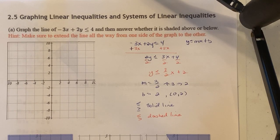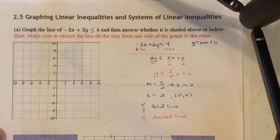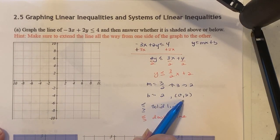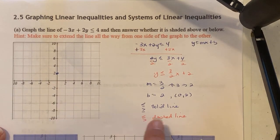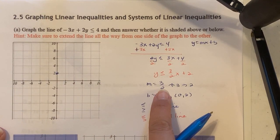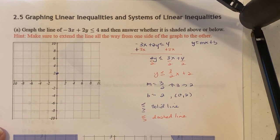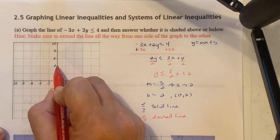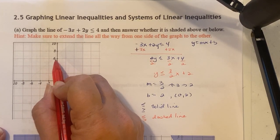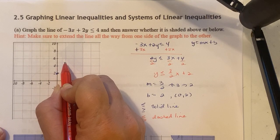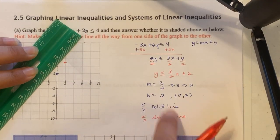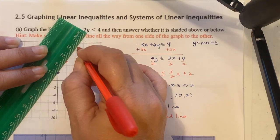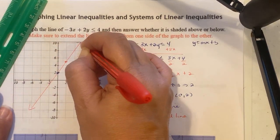We're going to graph this first by hand, then I'll show you how to put it in the graphing calculator. We start at (0, 2). Since we're in increments of 2 units, and the slope is 3 over 2, we go up 3 units — halfway between 4 and 6 — then 2 units to the right. That gives us our line.